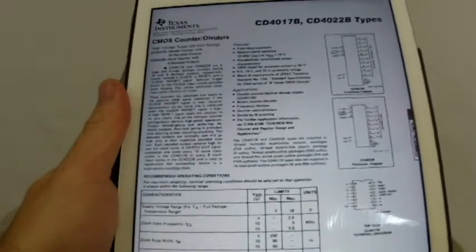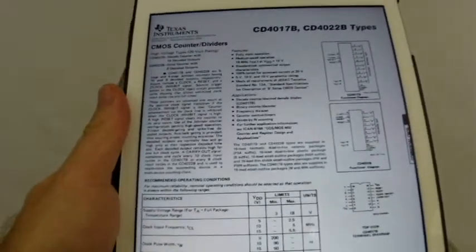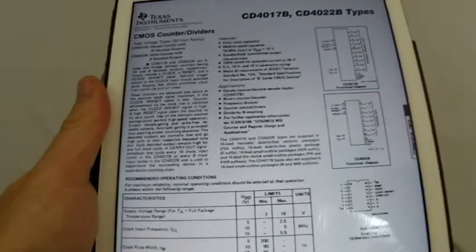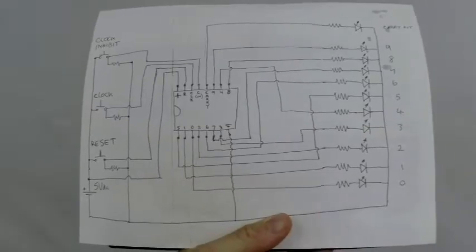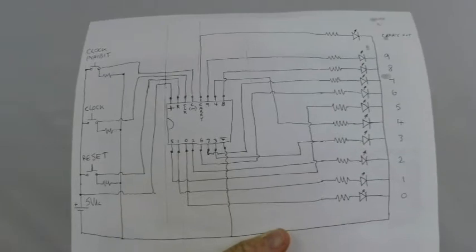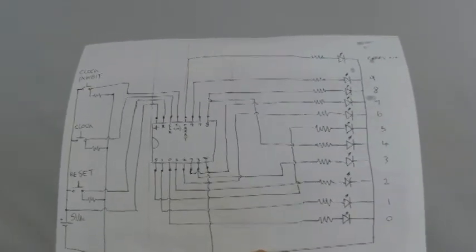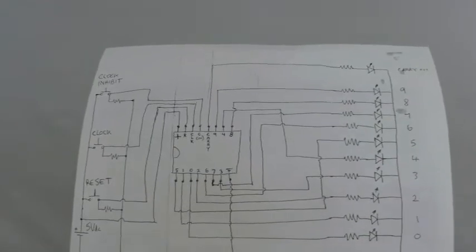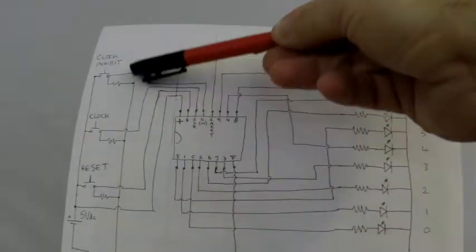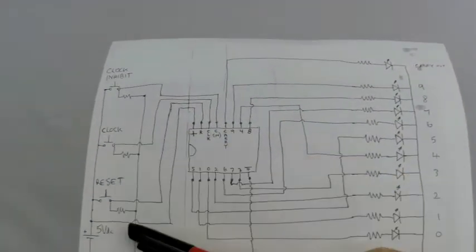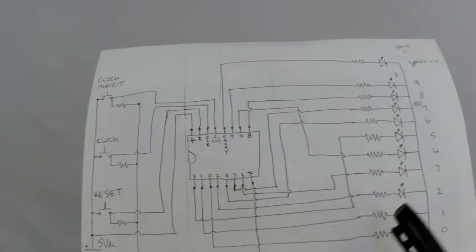So, with all that said, let's take a look at my schematic, and then we will jump to the breadboard. Alright, here is the schematic. It might look crazy, but it is actually not that bad at all. I set up the three inputs, which is clock, reset, and clock inhibit here.